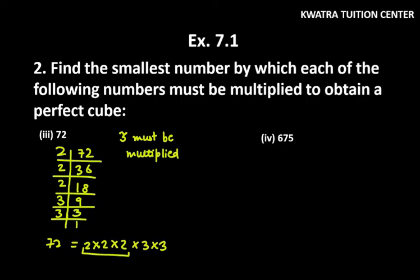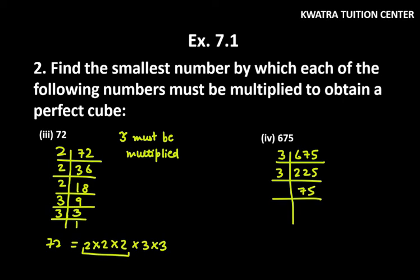Let's move on to the fourth part. The fourth part is 675. How will it be divisible? From 3. 675 is divisible by 3, so you get 225. 225 divisible by 3, so you get 75. 75 is again divisible by 3, so you get 25. 25 is divisible by 5, you get 5 again.